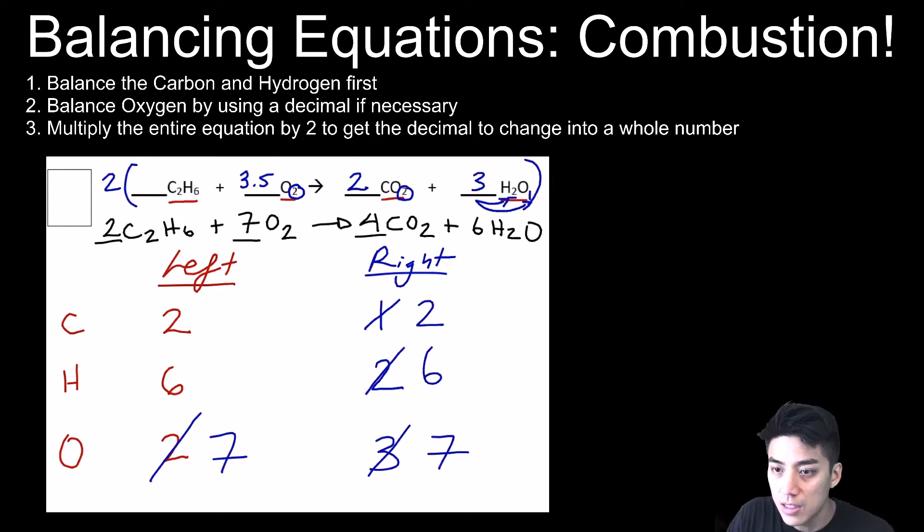When you add these coefficients up, we get a sum of 19, which is normal for combustion reactions. It's not unusual to get sums that are like 63 or 71 or something. That's normal for combustion problems.